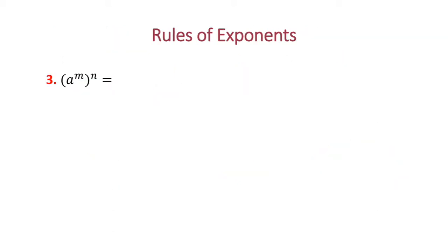Continuing on the rules of exponents, we're doing the power rule. When you have a power to a power, this is where we multiply them. So a to the m to the n equals a to the m times n — as long as you have base a raised to the power m, in parentheses, to the power n.